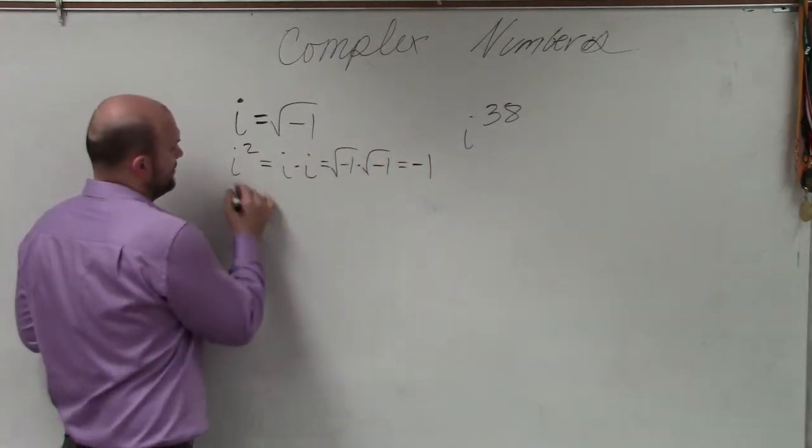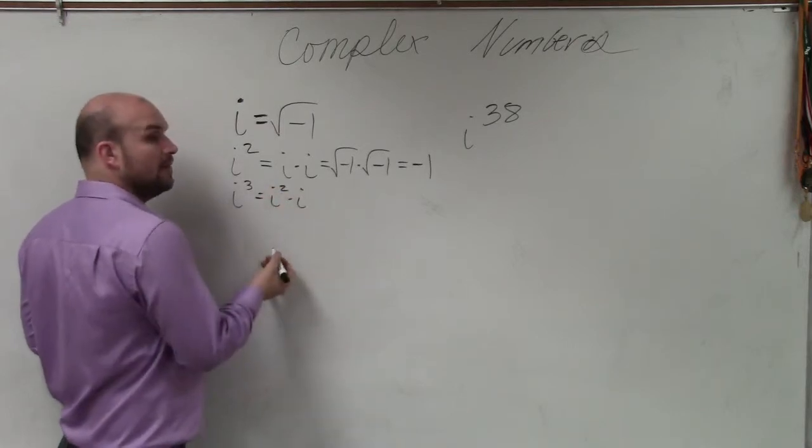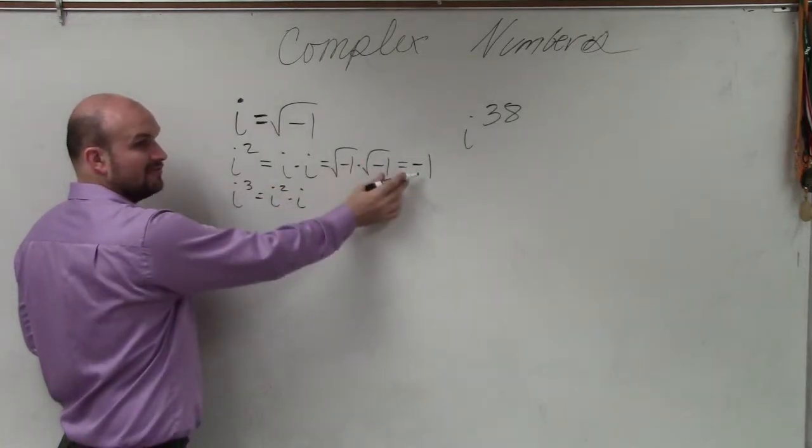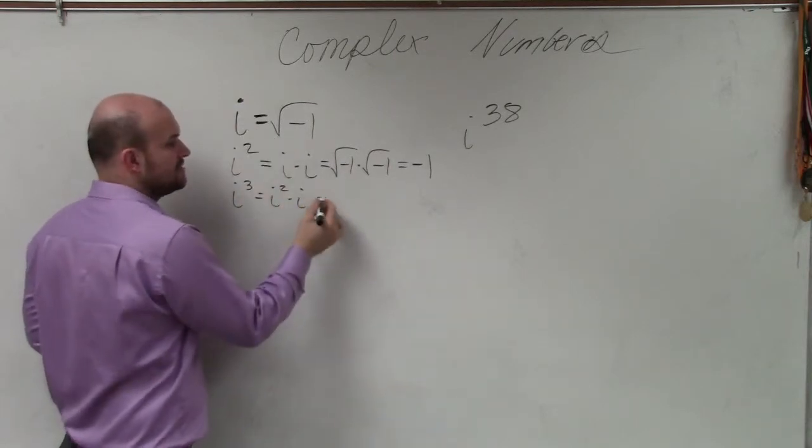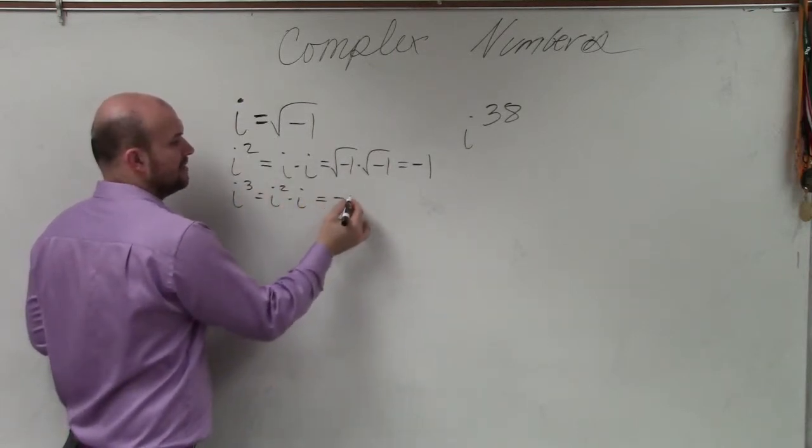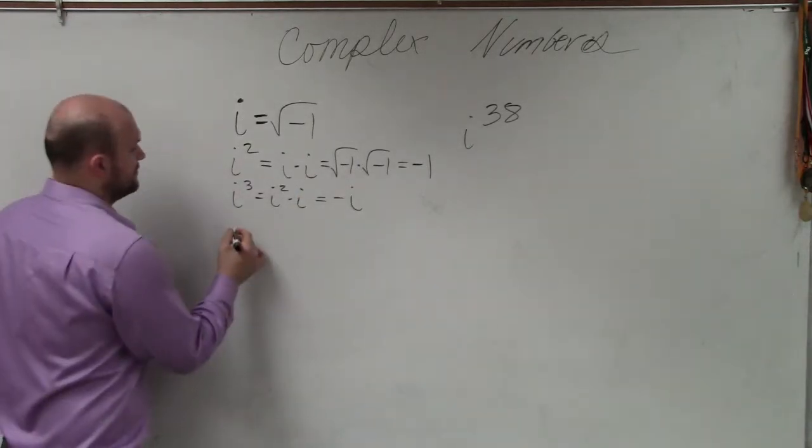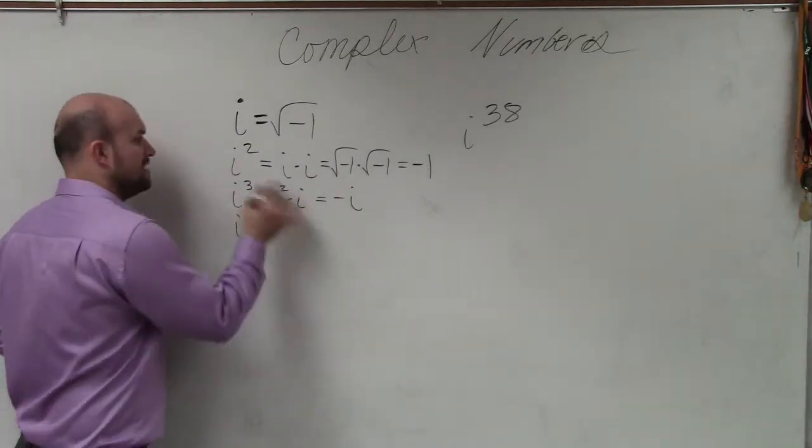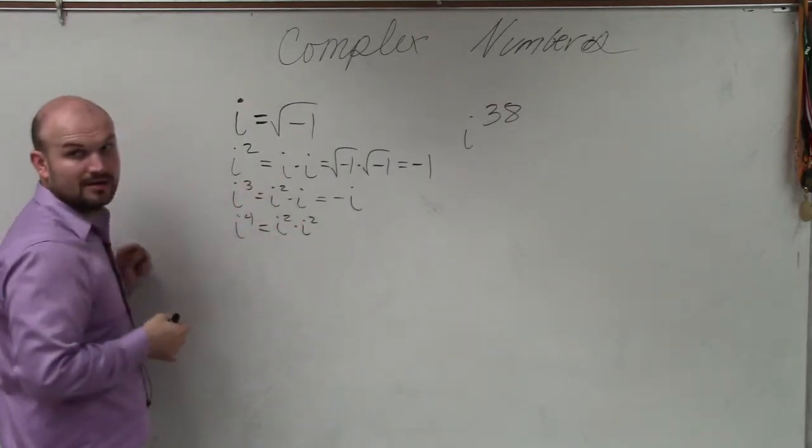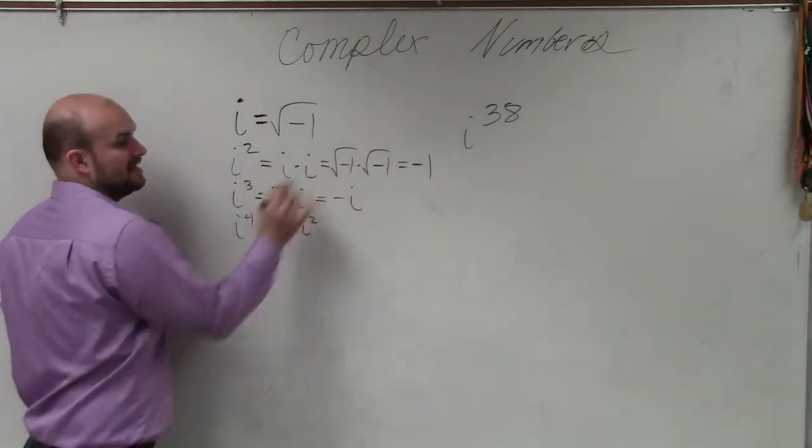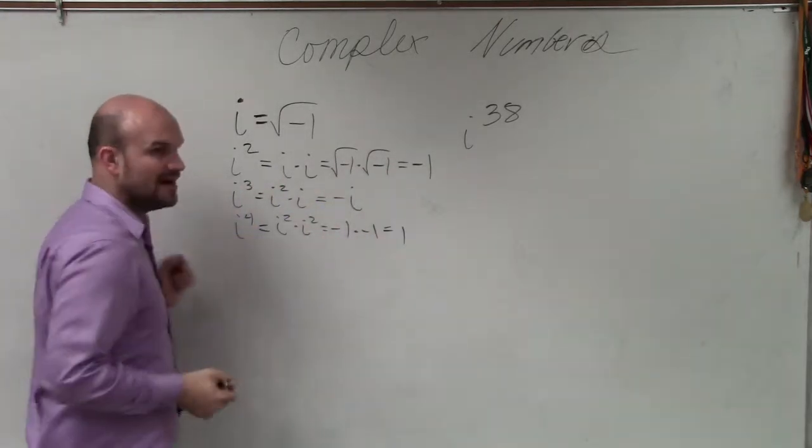So now we do i cubed, which is basically i squared times i. Well, i squared is negative 1, we already just showed that, times i. So negative 1 times i is negative i. Okay, now let's do i to the 4th. So that is basically, i to the 4th is i squared times i squared. Agree with me, right? Add the powers. i squared is negative 1, so that's negative 1 times negative 1, which equals positive 1.